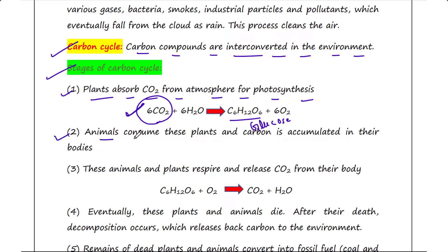Step two: animals consume these plants and therefore get glucose, and then carbon is accumulated in their bodies.